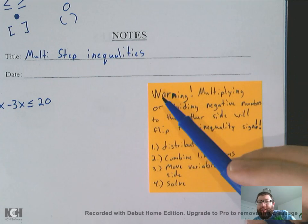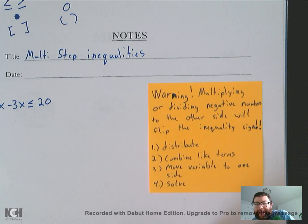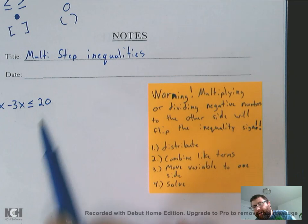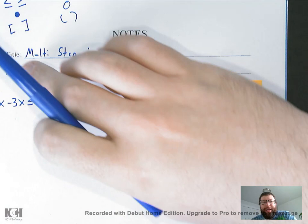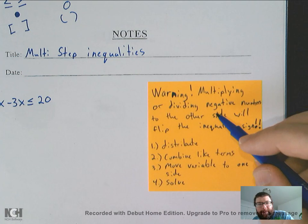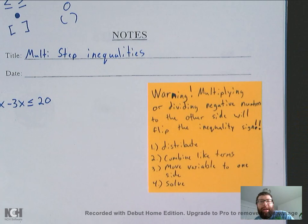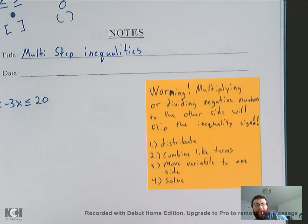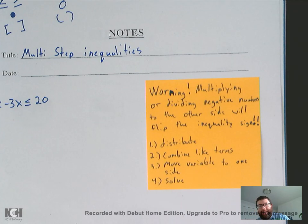The thing that makes them different, besides having to graph and do the interval notation, is you have the warning. Any time you multiply or divide a negative number to the other side of the inequality, it means going to the other side, not distributing a negative on the same side, but actually moving it across the inequality sign. If you move a negative number, it has to be negative, it will flip the inequality sign. So, instead of being less than, it would be greater than.